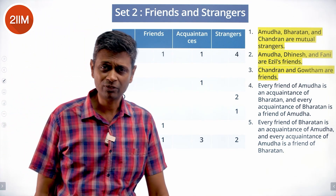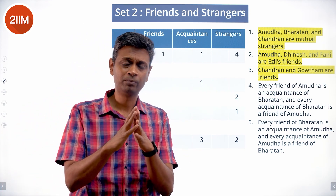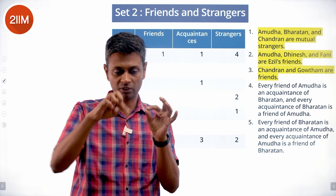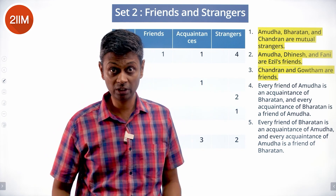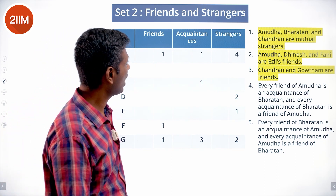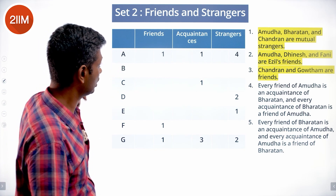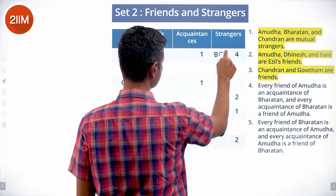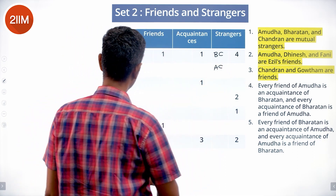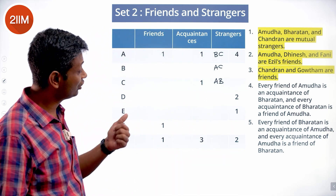I initially tried drawing links establishing friends, strangers, and acquaintances with different line styles, but it became too confusing in the exam hall, so I shifted to a table approach. Amudha, Bharatan, and Chandran are mutual strangers: for Amudha, B and C are strangers; for Bharatan, A and C are strangers; for Chandran, A and B are strangers.